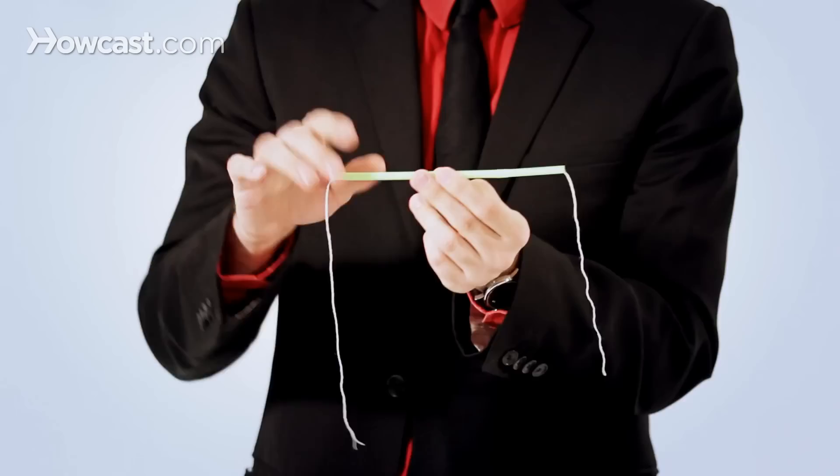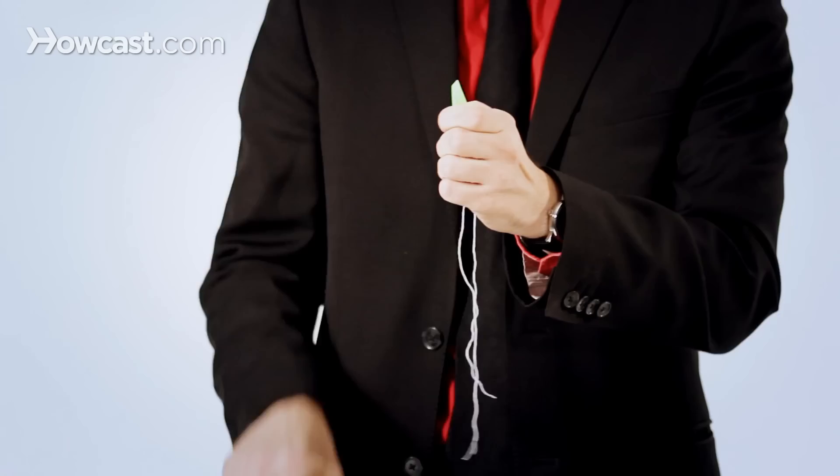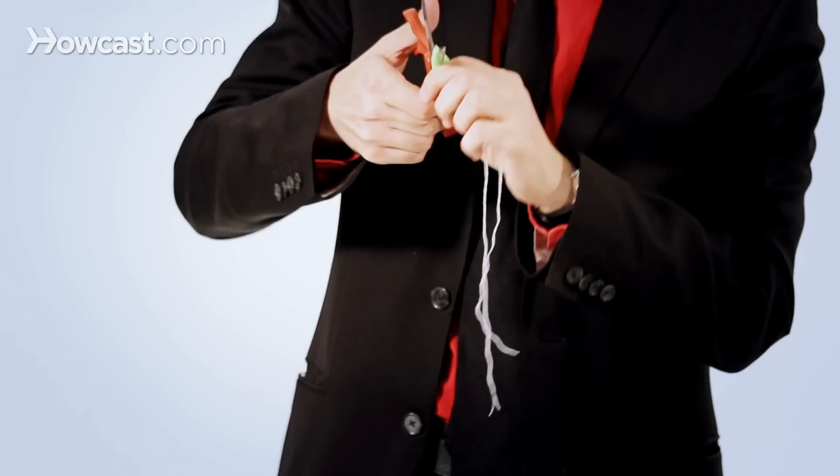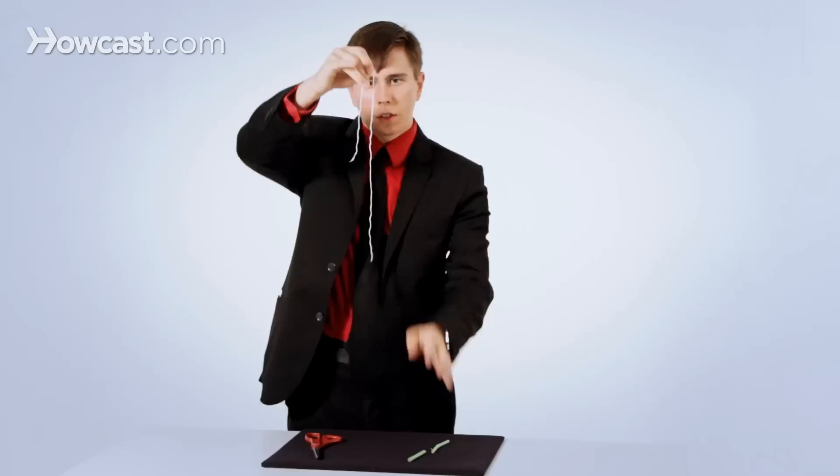You have a string and you place it through the straw. I will take a pair of scissors and I cut straight through the middle of the straw. And somehow, with a blow, the string stays in one piece. That's the string and straw trick.